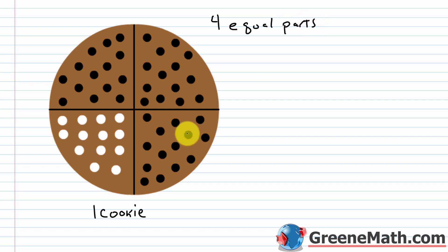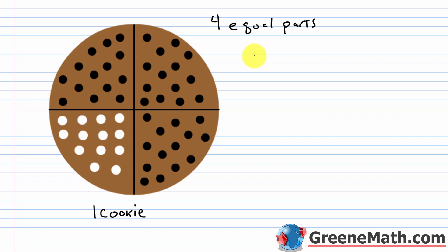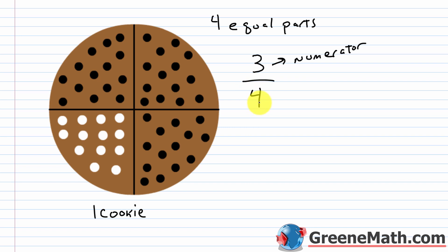What if I asked you how much of this cookie has chocolate chips? Three parts out of the four have chocolate chips, so our numerator is going to be three. The numerator is the number of parts being used or discussed, and we're discussing how much of the cookie has chocolate chips — that's one, two, three. So three is our numerator. We have our fraction bar to separate the numerator from the denominator, and the denominator is four because we have four equal pieces in our whole amount.